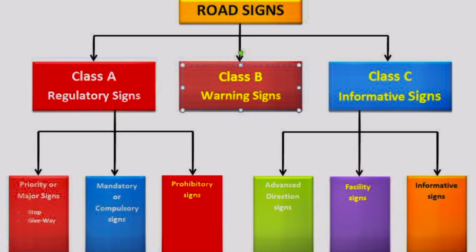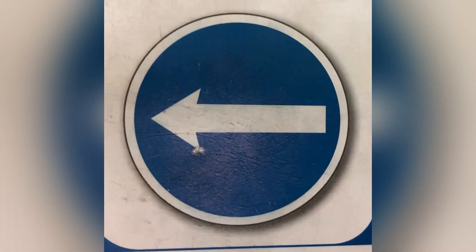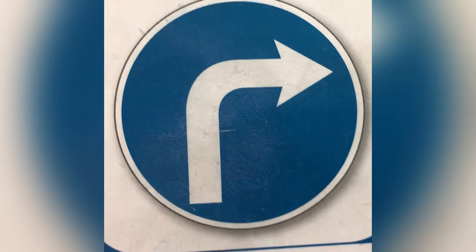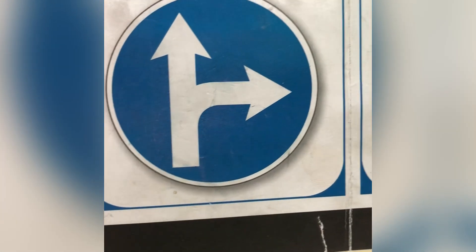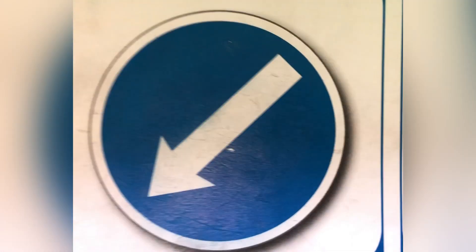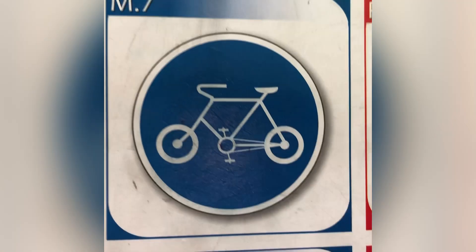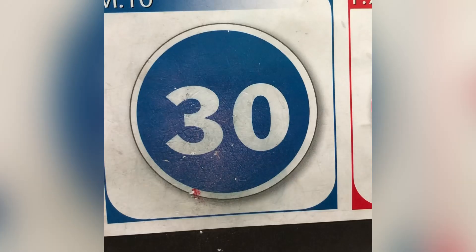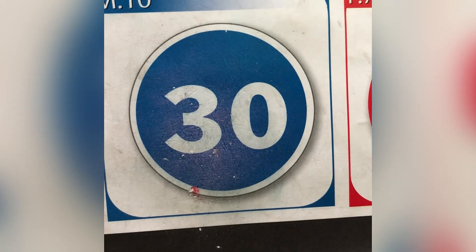The second subdivision of Class A regulatory signs is mandatory signs. These sometimes give you directions you must follow — for example, compulsory go straight. There is compulsory direction to be followed: compulsory go left, compulsory go straight, compulsory turn right, compulsory go straight or turn right, compulsory pass to the left, compulsory bicycle track, compulsory pedestrian track, and compulsory cattle track.